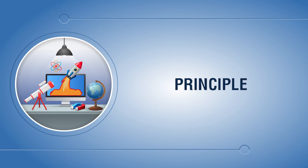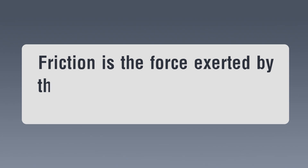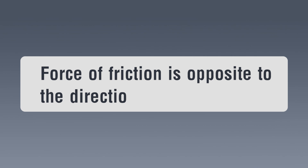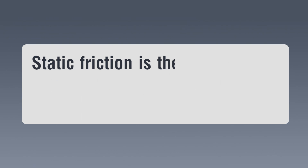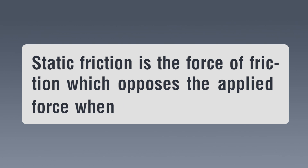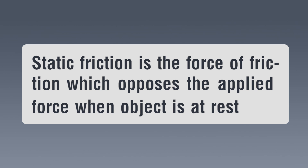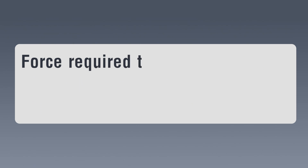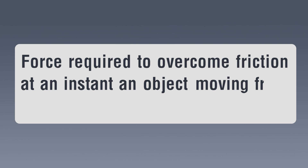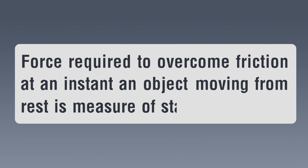Principle: Friction is the force exerted by a surface when an object moves across it, and the force of friction acts opposite to the direction of motion. Static friction is the force of friction that opposes the applied force when the object is at rest. The force required to overcome friction at the instant an object starts moving from rest is the measure of static friction.